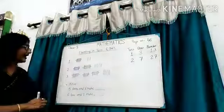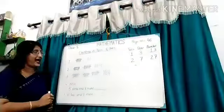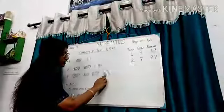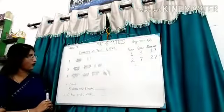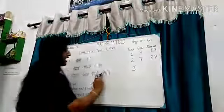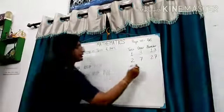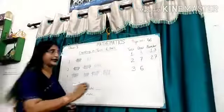Next, I have 3 bundles of 10 sticks and 1, 2, 3, 4, 5, 6. 6 loose sticks. So 3 10s and 6 loose sticks means 6 1s. So the number is 36.